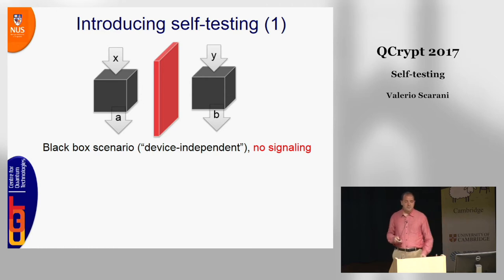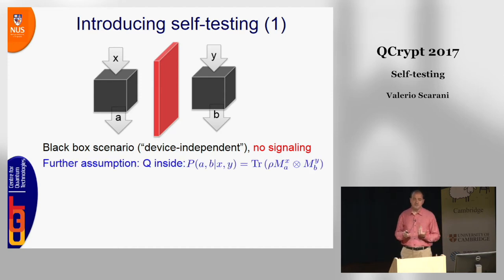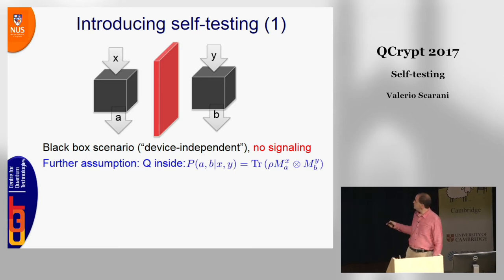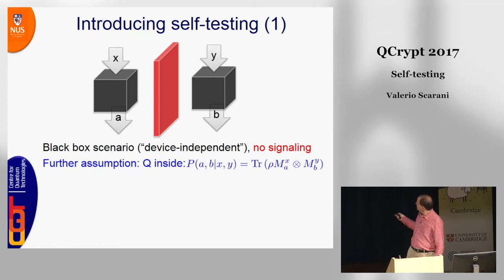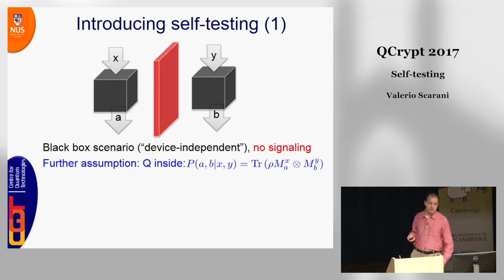In the problem of self-testing, the problem is defined by assuming the validity of quantum theory. We assume that whatever is in these boxes can be described by a quantum state, and whatever happens corresponds to some quantum measurement. The no-signaling condition is captured by the fact that these two measurements are in a tensor product structure. What we observe are these conditional probabilities, and the assumption is that there exists a state and some measurements such that this is the case.